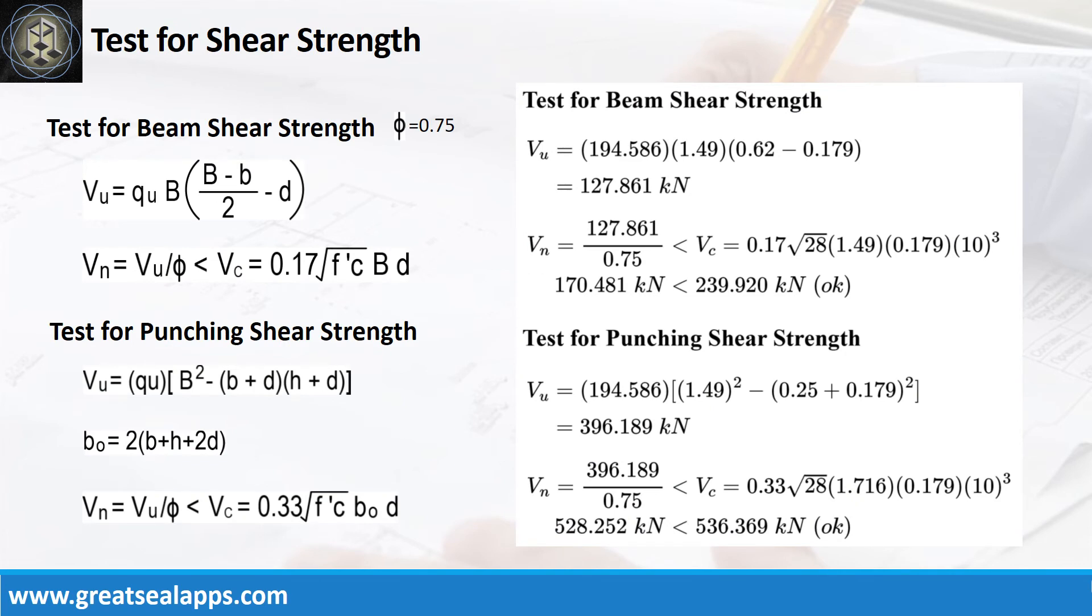The factored beam shear force is 127.861 kN. The nominal force is 170.481 kN, less than 239.92 kN concrete capacity.